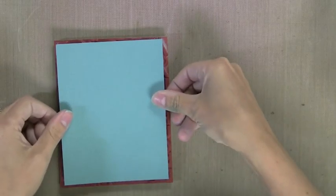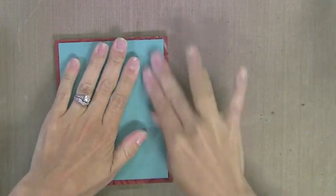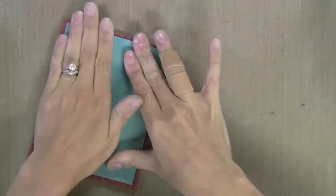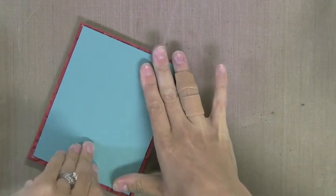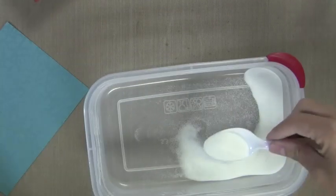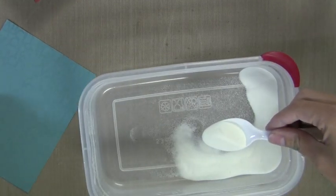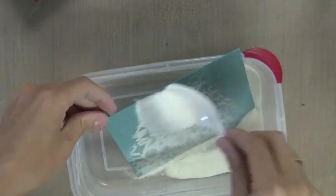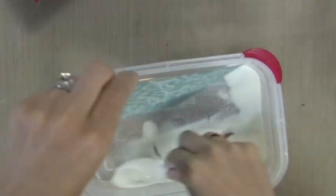I'm stamping it with Versamark ink on a piece of blue cardstock. Hero Arts and Studio Calico have teamed up to bring you the best in design and quality and I think you'll really love the stamps that they've come up with. So now that I've stamped it with Versamark ink I'm going to shake on some clear embossing powder and heat it which will result in a tone on tone background.